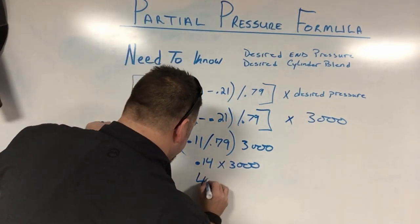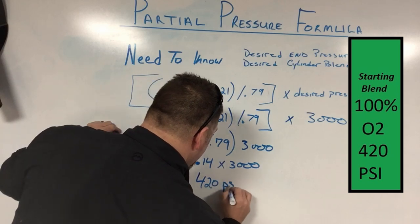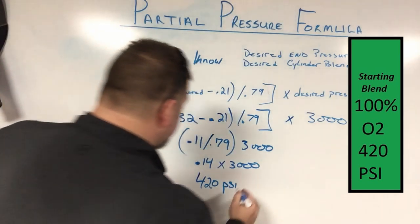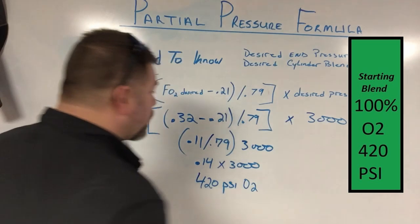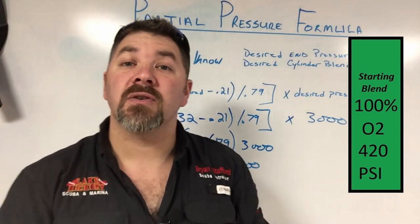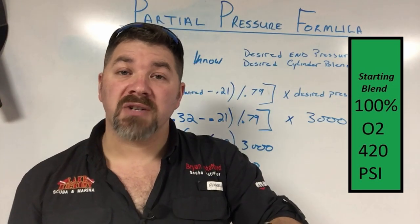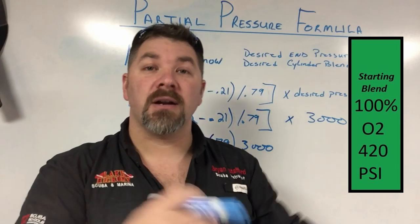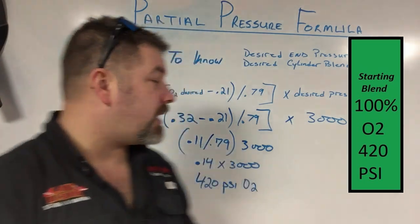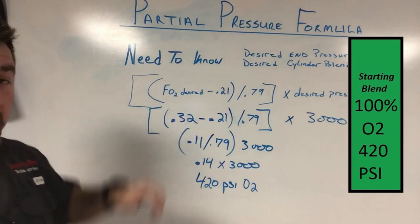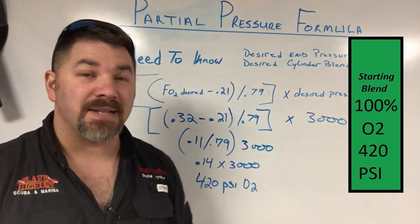And what that actually tells me is that if I want, let's say I've got an empty cylinder, and I want to put 32% in. Now, if I'm partial pressure blending, this is of course the procedure of putting pure oxygen into the cylinder, then putting air and letting it mix to get my desired blend. This tells me for a 32% blend filled to 3000 psi, I need to put 420 psi of oxygen in the cylinder first before I hook it to the compressor and mix air into it to get my desired blend of 32%.